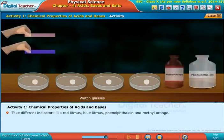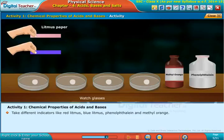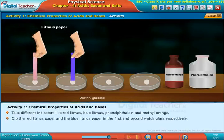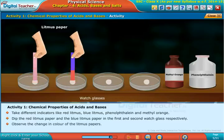Take different indicators like red litmus, blue litmus, phenolphthalein, and methyl orange. Dip the red litmus paper and the blue litmus paper in the first and second watch glass respectively. Observe the change in color of the litmus papers.